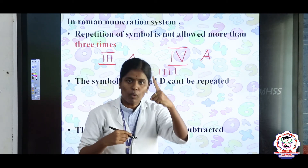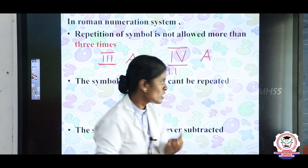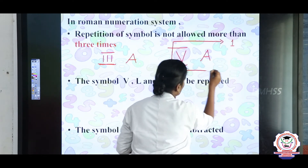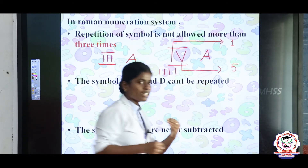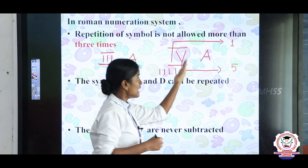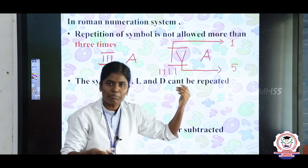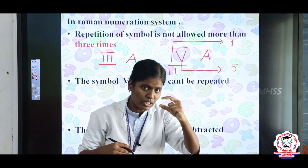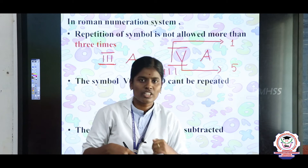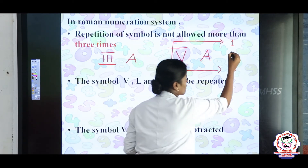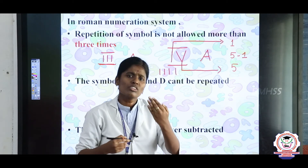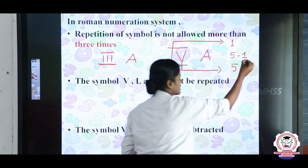I represents 1 in Hindu-Arabic numerals. If the smaller numeral is written to the left side of the greater numeral, that is subtraction. So take the greater numeral first and subtract the smaller numeral. For example, IV equals 5 minus 1, and the answer is 4. So IV equals 4.